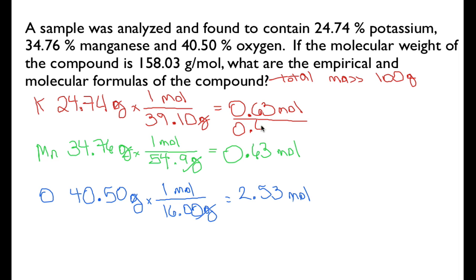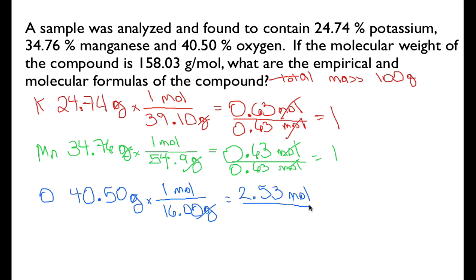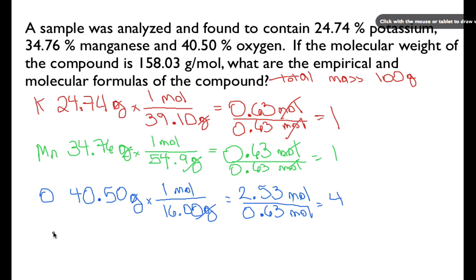We divide each molar value by 0.63 moles. For potassium: 0.63 divided by 0.63, the moles cancel and we get 1. For manganese: 0.63 divided by 0.63 gives us 1 again. For oxygen: 2.53 divided by 0.63 is approximately 4. So the ratio of potassium to manganese to oxygen is 1 to 1 to 4, which is the lowest whole number ratio.